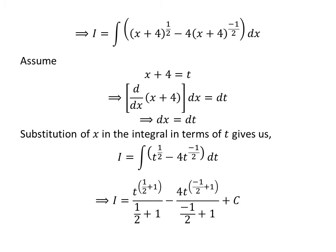We know the integral of t raised to the power of n is equal to t raised to the power of n plus 1 upon n plus 1. So i is equal to t raised to the power of half plus 1 upon half plus 1 minus 4 times t raised to the power of minus half plus 1 upon minus half plus 1 plus capital C.